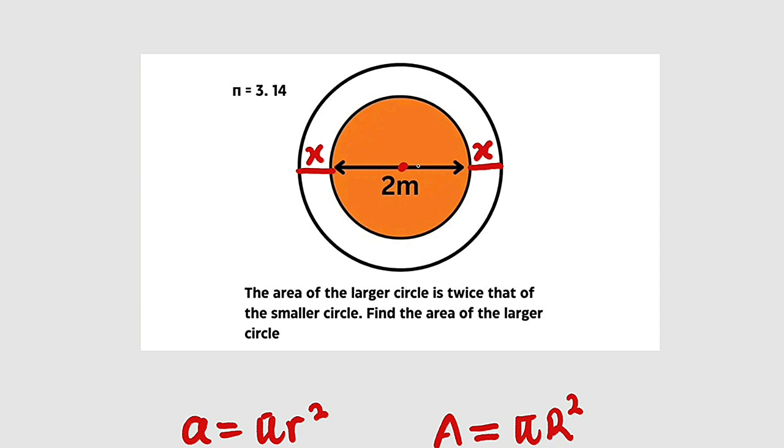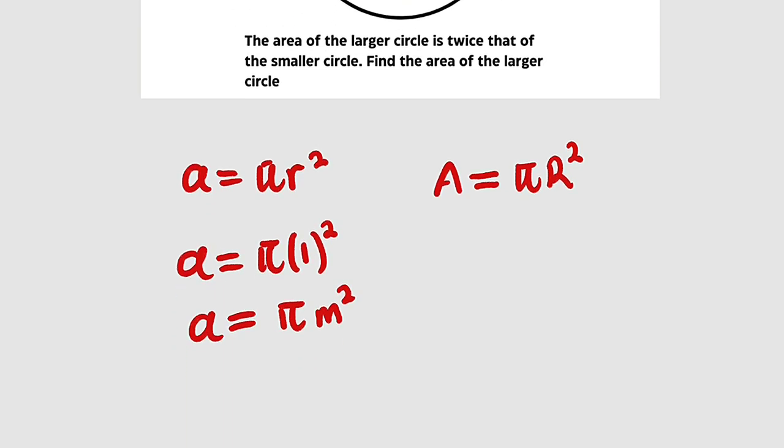And if this is the center of the circle, from the center to this point is 1. So from the center to the other end will be 1 plus x. Therefore, the radius of the bigger circle will be 1 plus x meters. So now let us substitute it here. We have the area to be equal to pi 1 plus x squared.